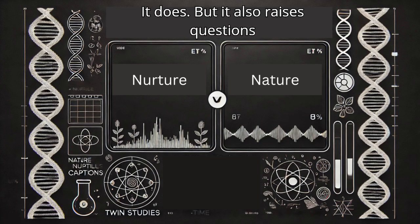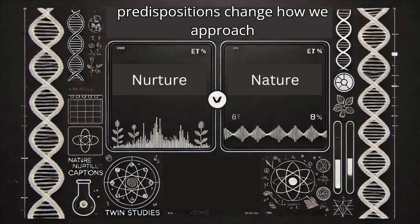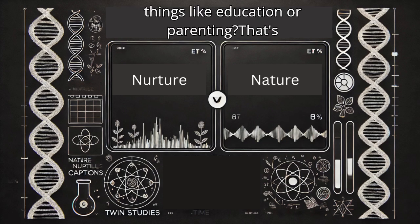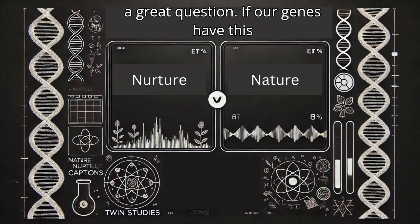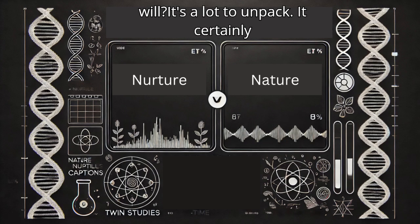It does. But it also raises questions about how we use this information. Does knowing about these genetic predispositions change how we approach things like education or parenting? That's a great question. If our genes have this much of an impact, where does that leave things like personal responsibility, free will? It's a lot to unpack.